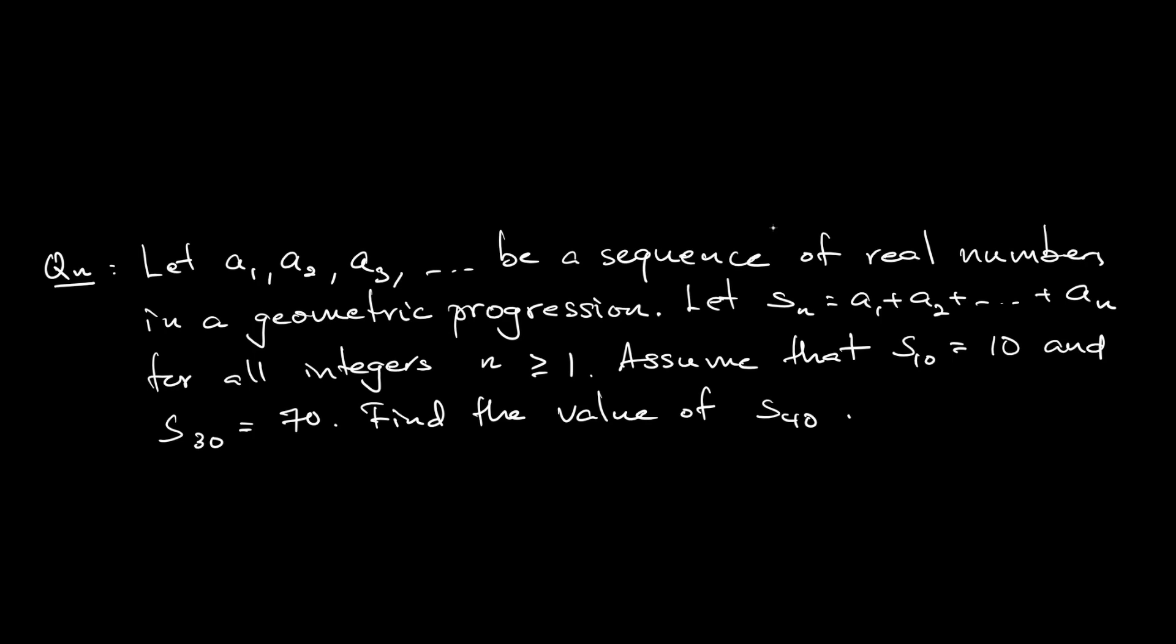Let's read the question together. Let a1, a2, a3 be a sequence of real numbers in a geometric progression. Let Sn equal a1 plus a2 all the way until an. So Sn is the sum of the first n terms for any integers n greater than or equal to 1.